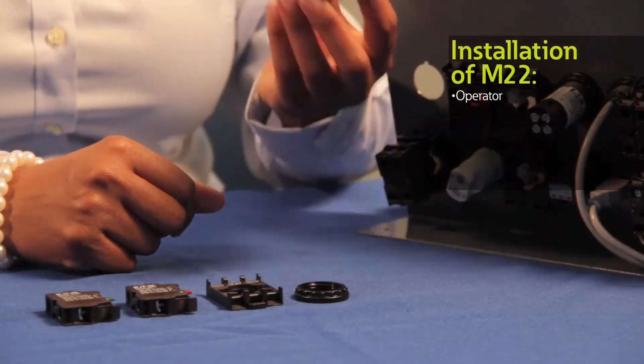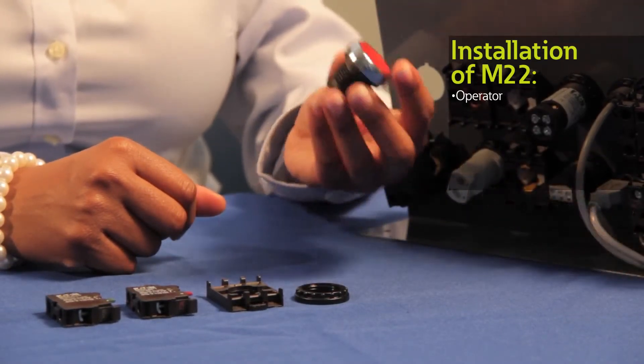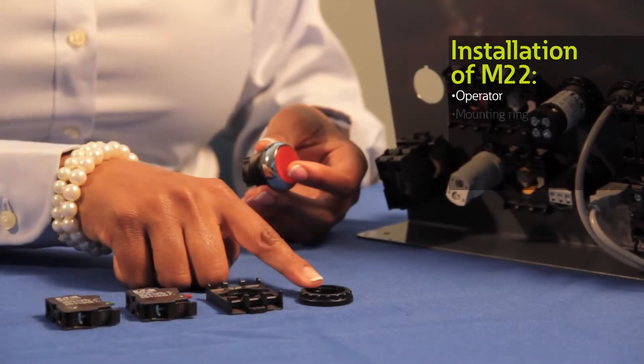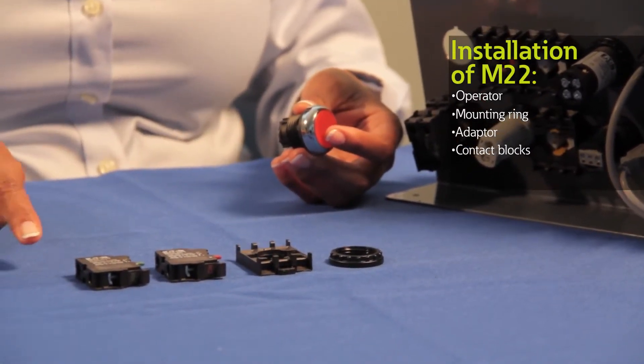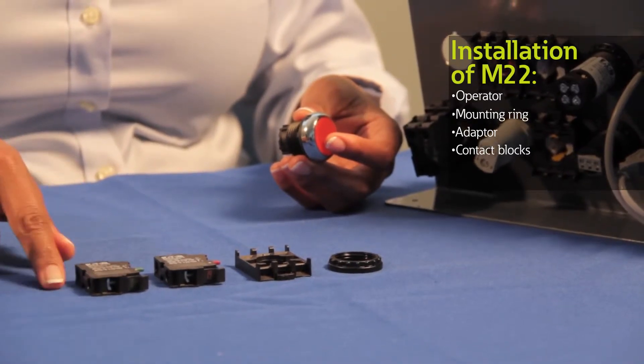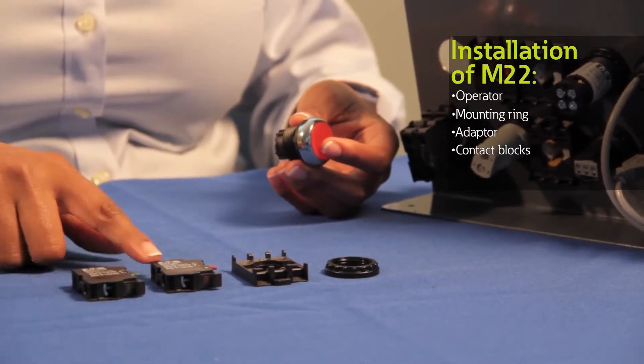Assembling our M22 push buttons is quick and easy so let me walk you through the steps. You'll need an operator. In this instance I'm using a standard push button. You also require a mounting ring, an adapter, and contact blocks as needed. For this demonstration I'm using a normally open or normally closed contact block.